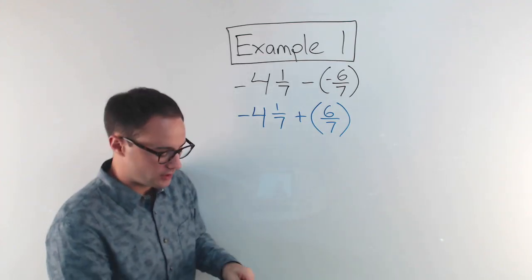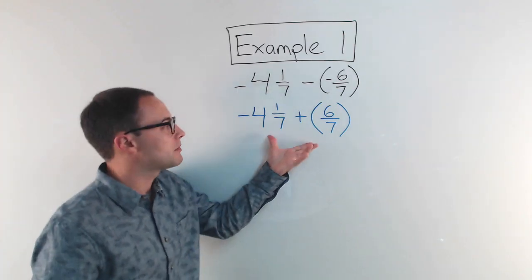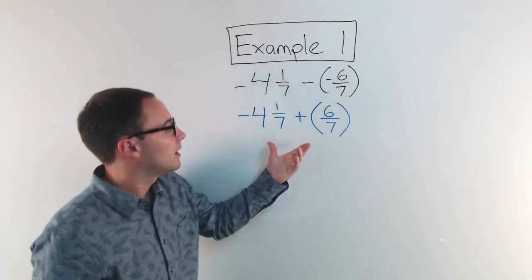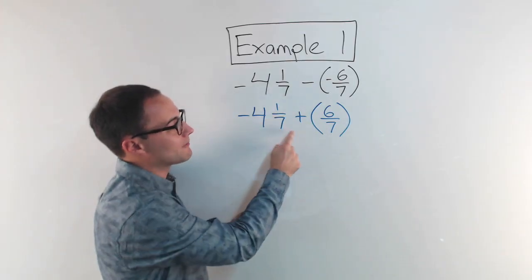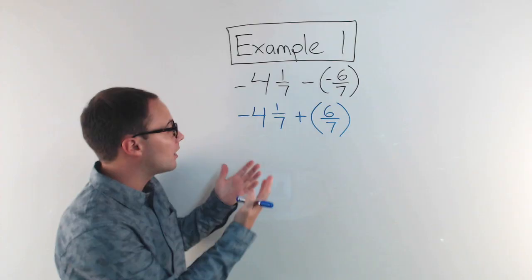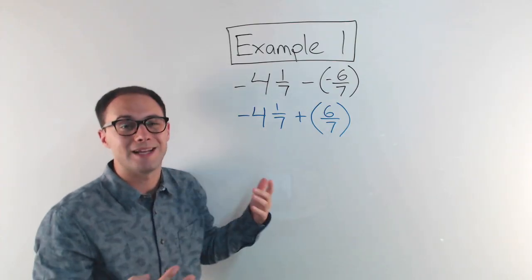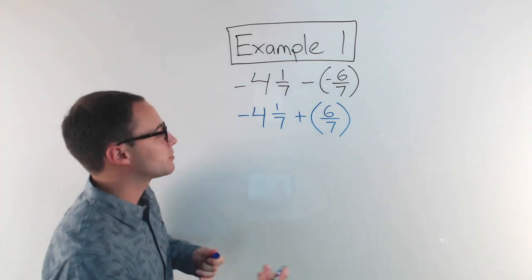Now I've got a mixed number plus a fraction. There's multiple ways to do this. If you're really comfortable with fractions and mixed numbers, you could probably do this in your head, especially because they have common denominators already. But if not, an easy way to do this is to just change the mixed number to an improper fraction. So that's what we're going to do.